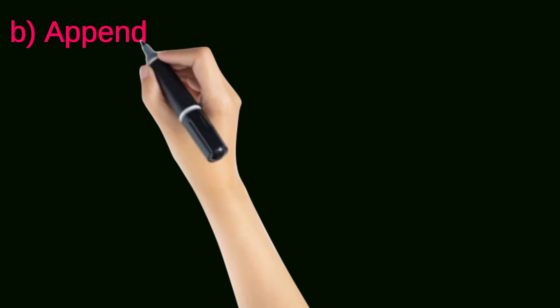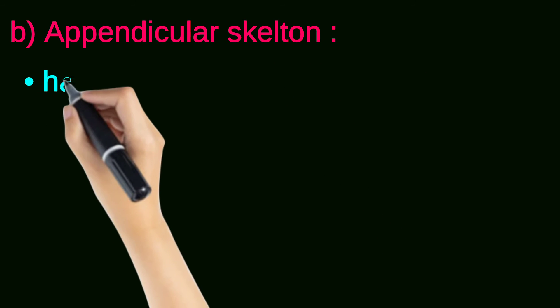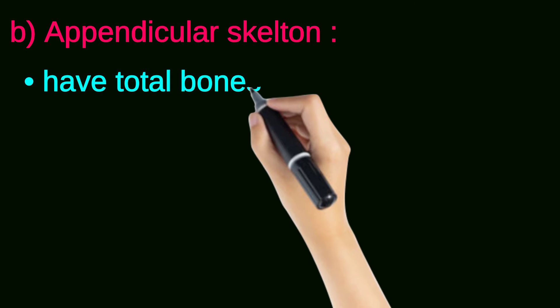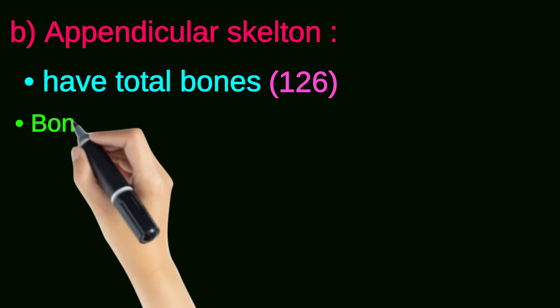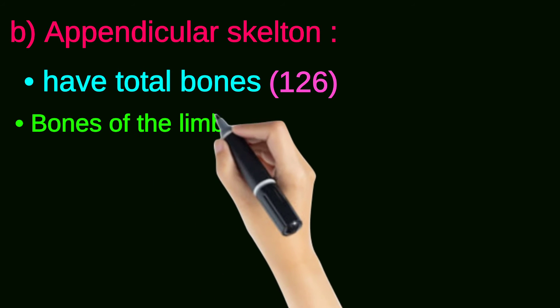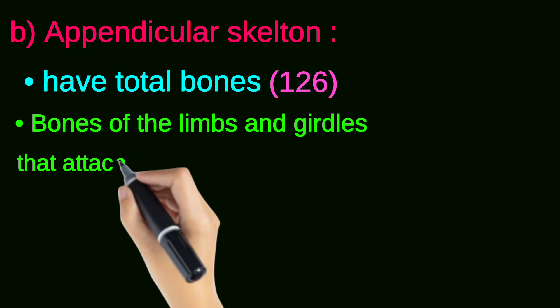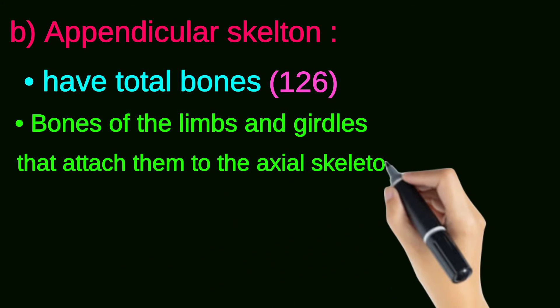The second division is appendicular skeleton, which have total bones 126, which involve bones of the limbs and girdles that attach them to the axial skeleton.